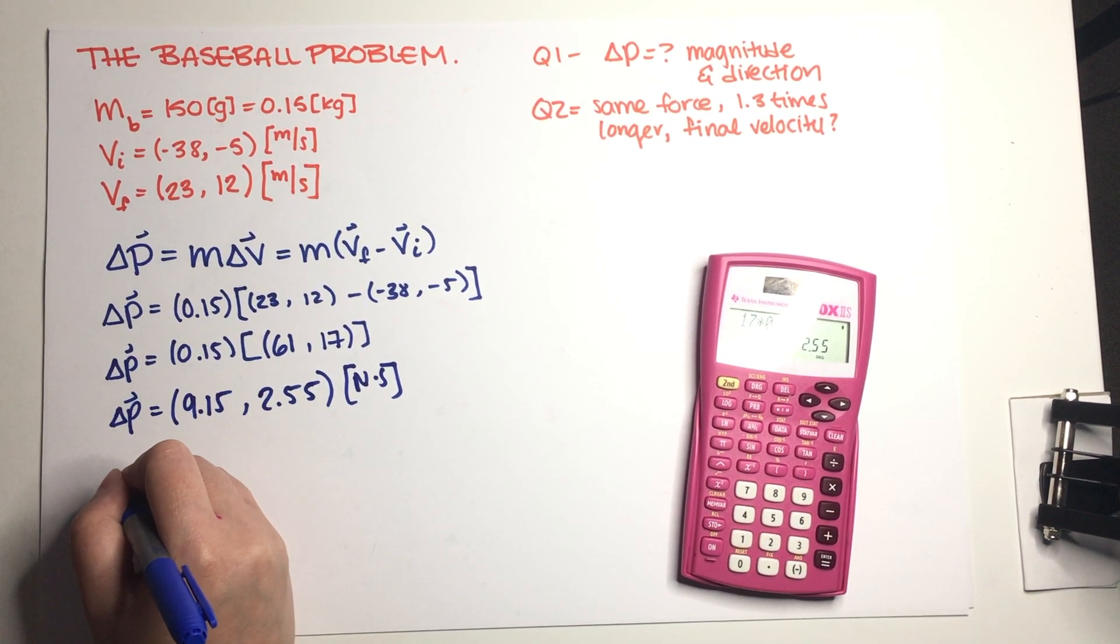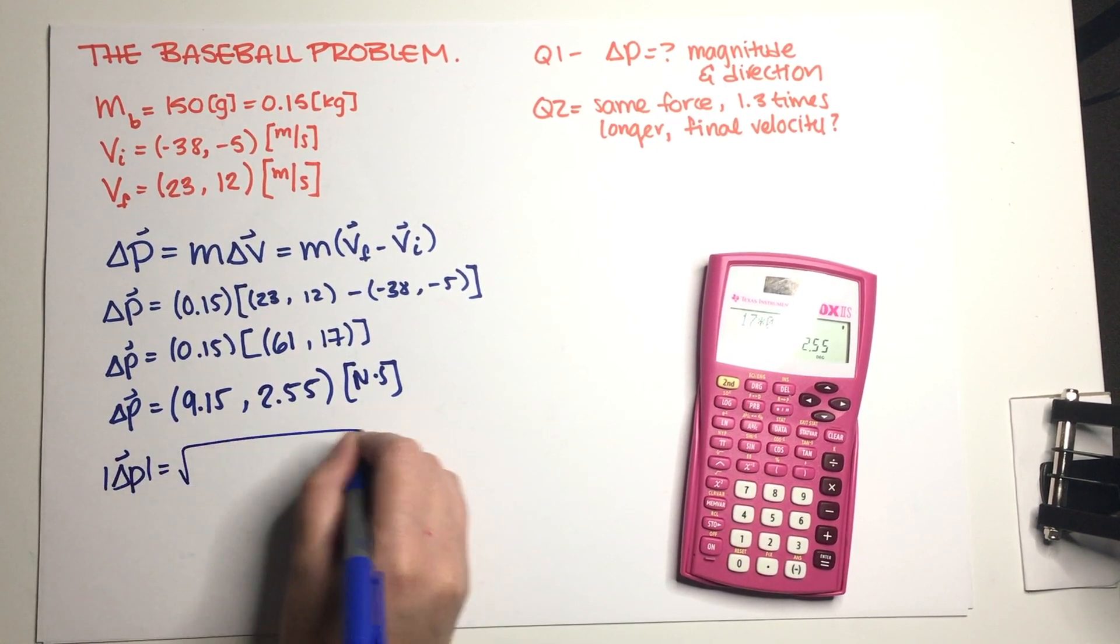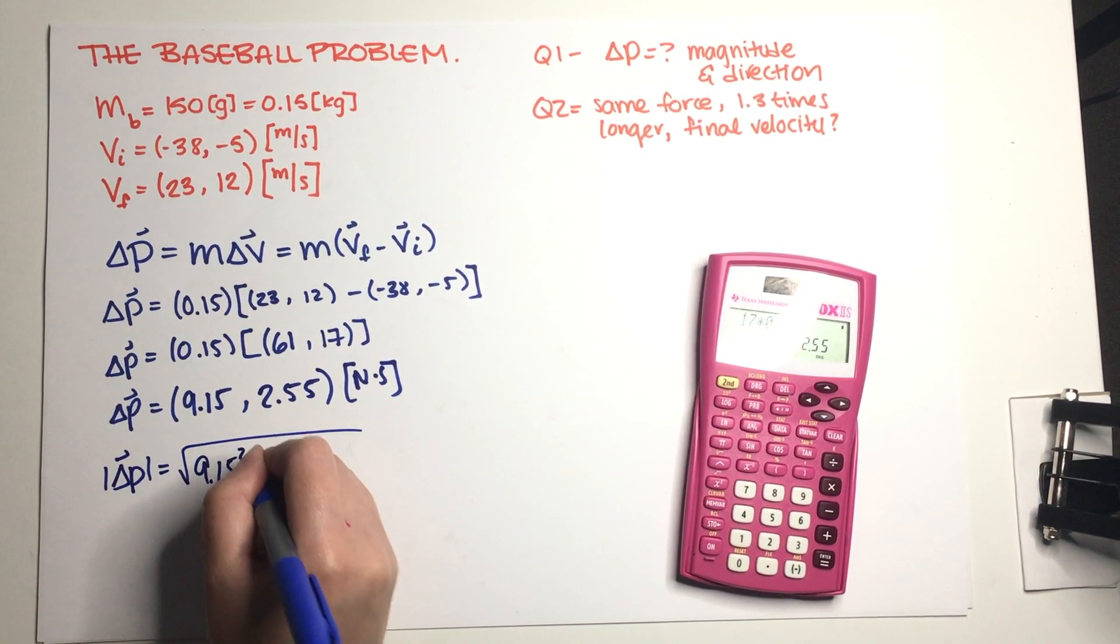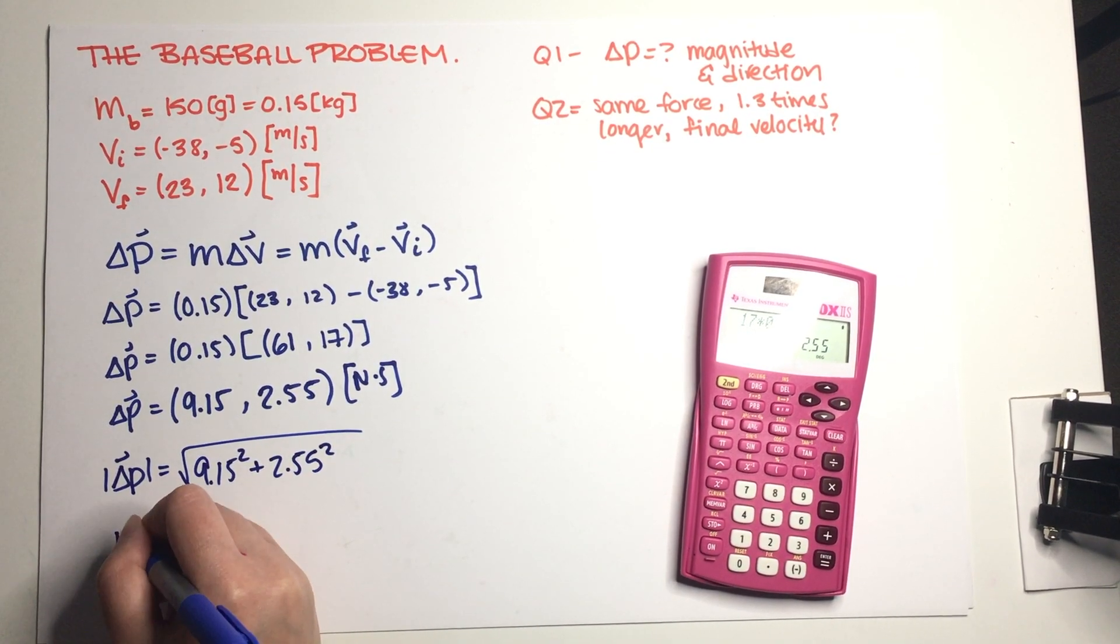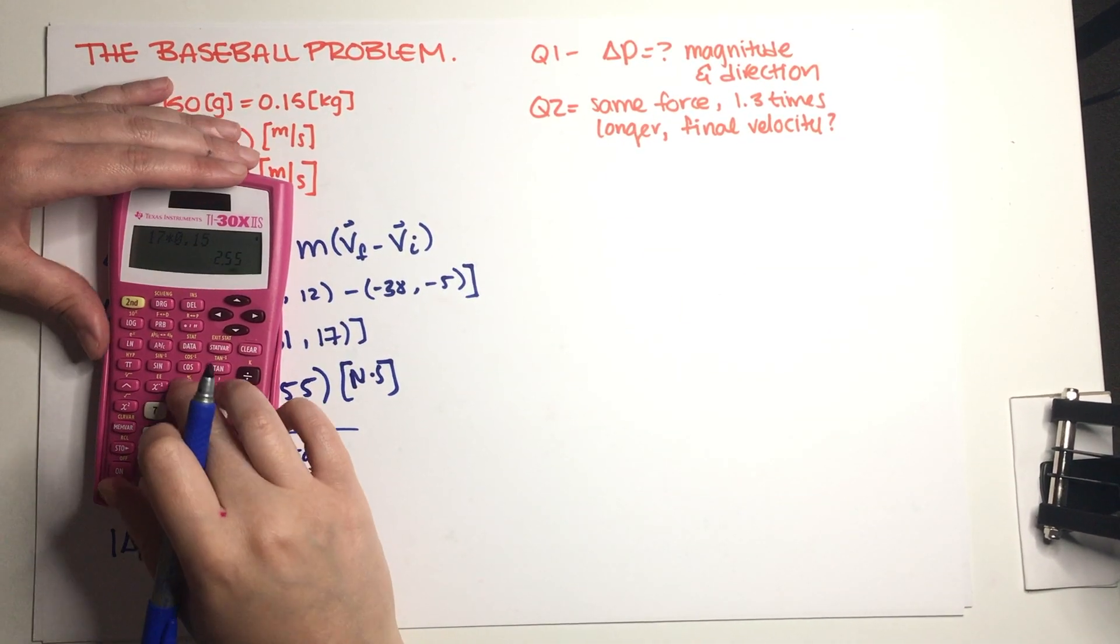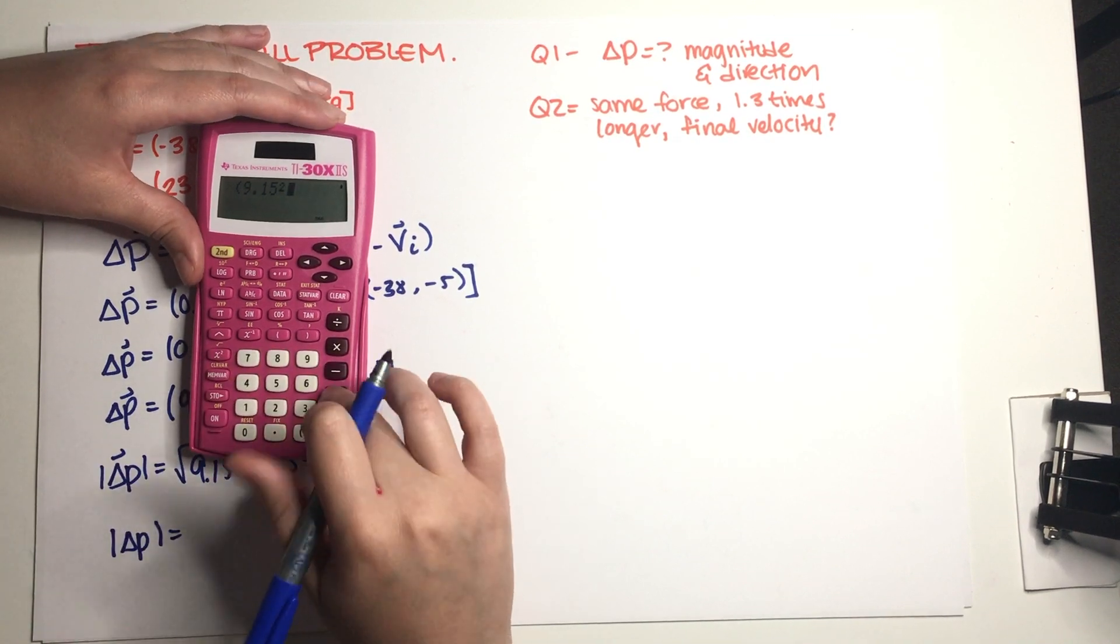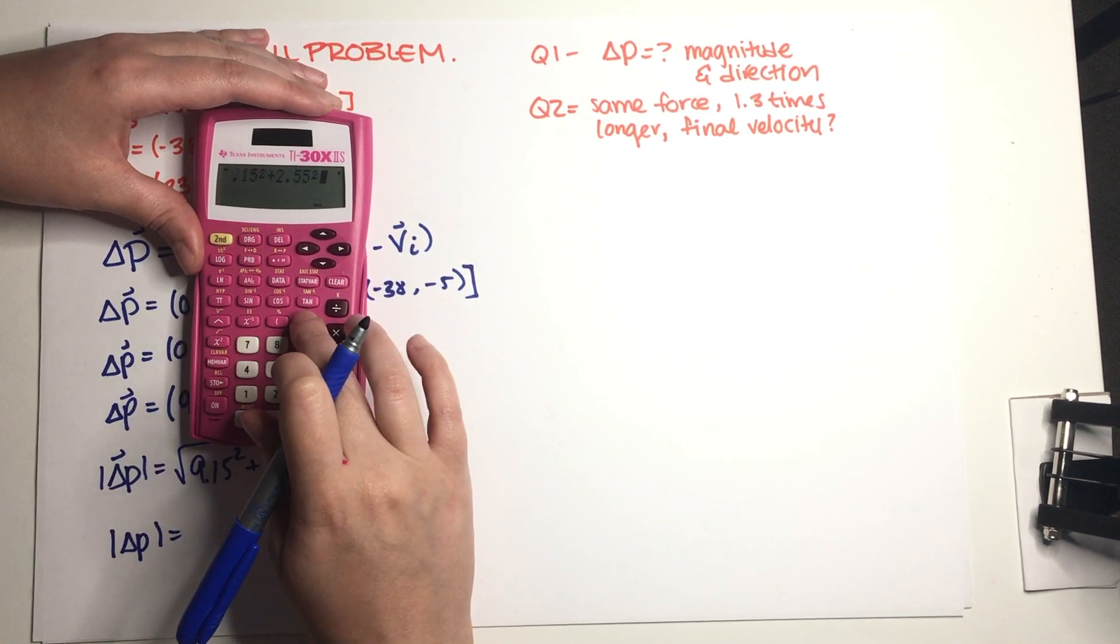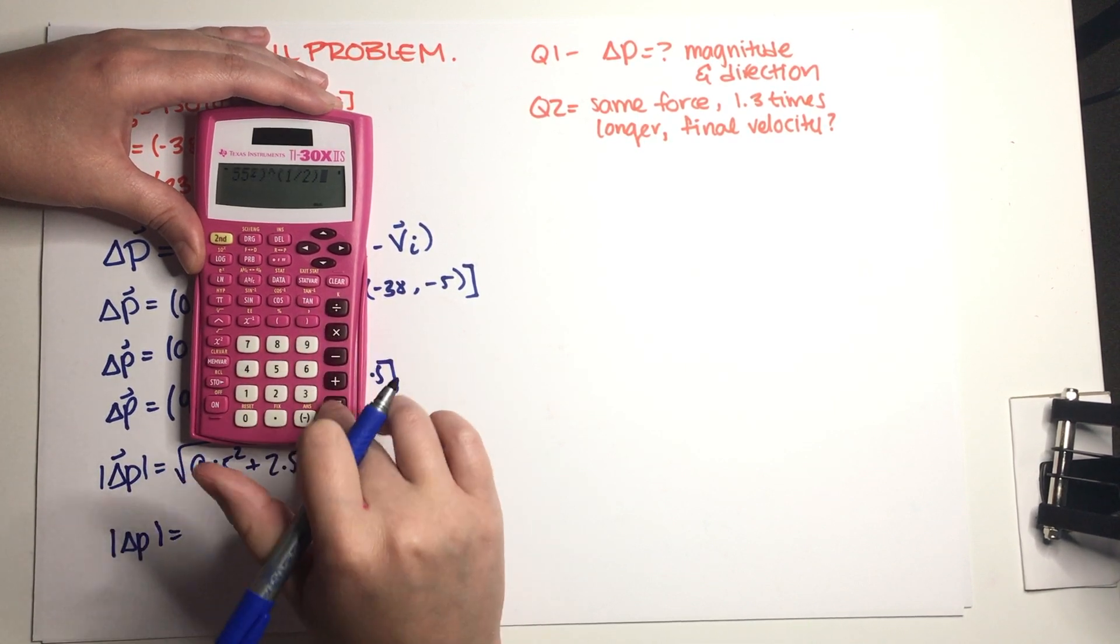Okay, so let's just delta p, let's just be explicit. So this is just 9.15 squared plus 2.55 squared. So delta p is equal to, let's see, 9.15 squared plus 2.55 squared and then one half.